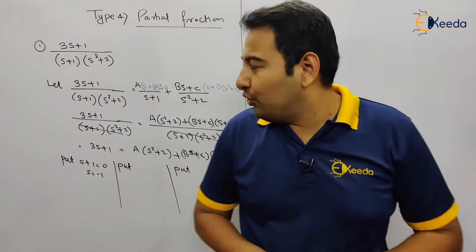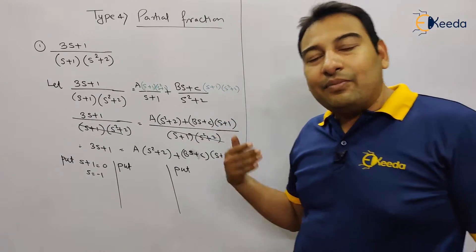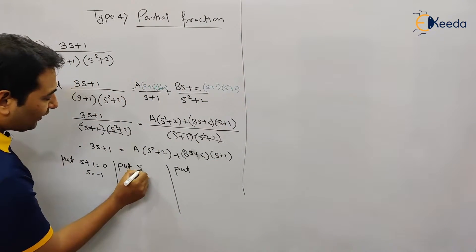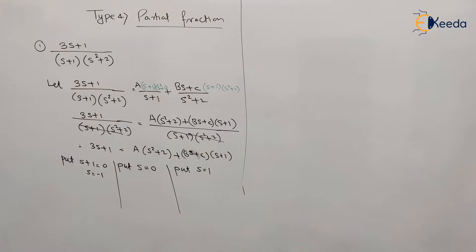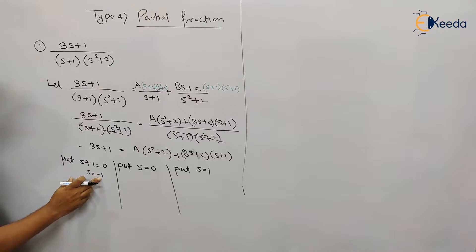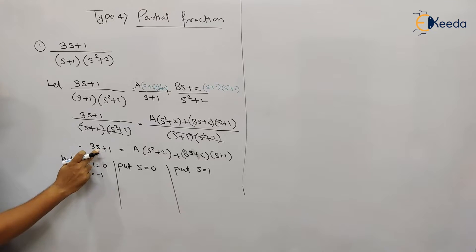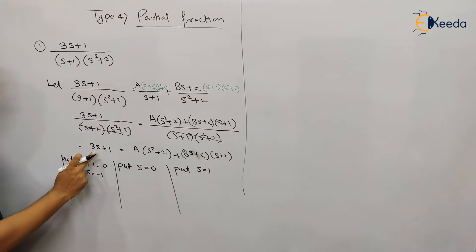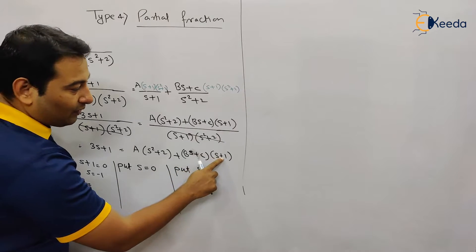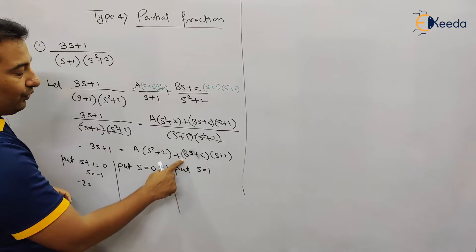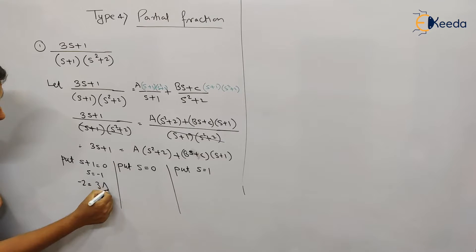We need two more substitutions because we want to find three values A, B, and C. So let us put s equal to 0 and s equal to 1 — these substitutions we choose ourselves. If we put s equal to minus 1 in the entire equation: left hand side gives 3(−1)+1 = −2. On the right, (−1+1) equals 0 so that whole term vanishes, leaving A((-1)²+2) = A(3), giving A equal to minus 2 by 3.